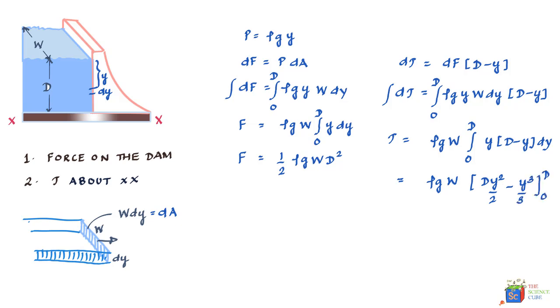As the limit changes from 0 to d, and when you apply the limits and kind of simplify this equation, what you'll find is that torque equals one sixth of ρgw d cubed.